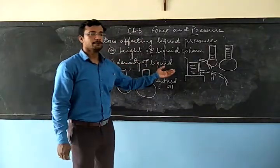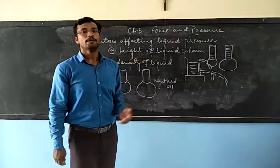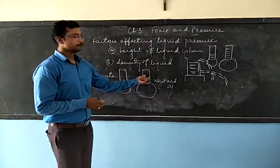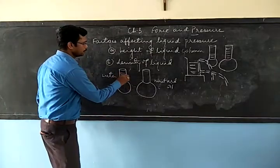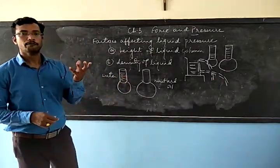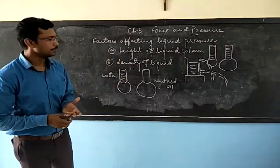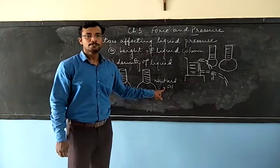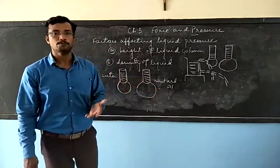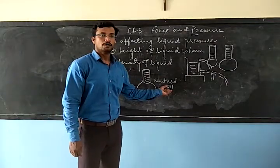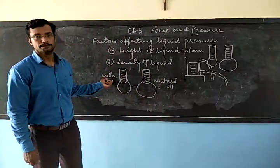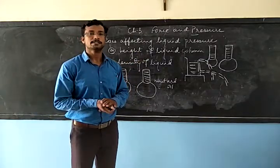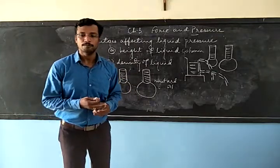The next factor is density of liquid. When the density of a liquid is more, it can exert more pressure. For example, we have taken two tubes fitted with a balloon. When water is filled, the balloon bulges very little, but when we fill with mustard oil, the balloon inflates much more, because mustard oil has greater density than water. These are the two factors which can affect liquid pressure. In the next class, we will see the consequences of liquid pressure. Thank you.